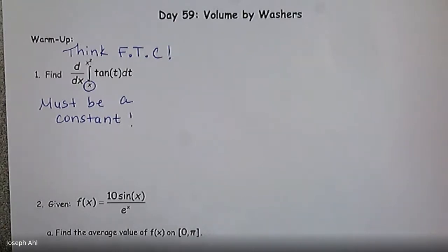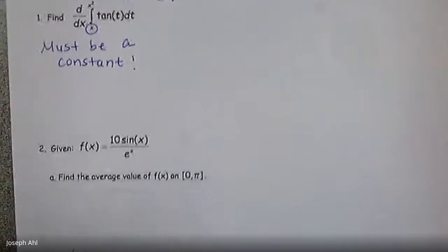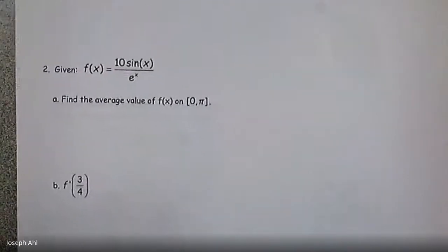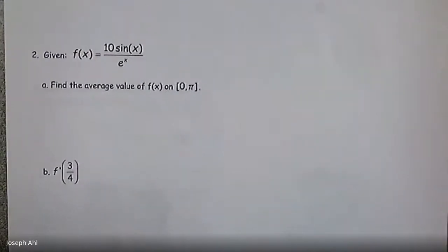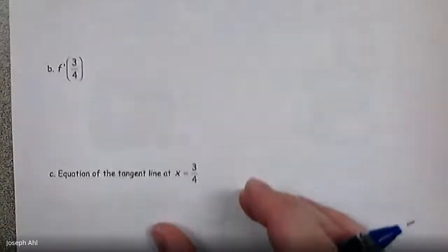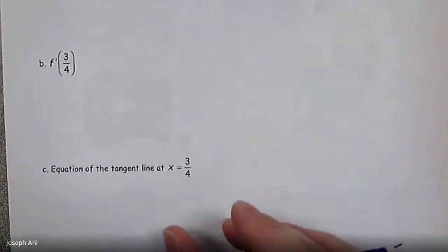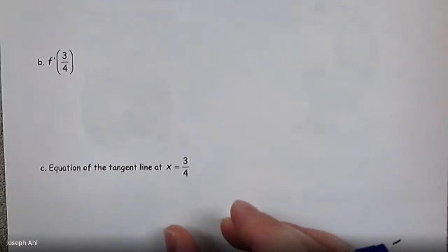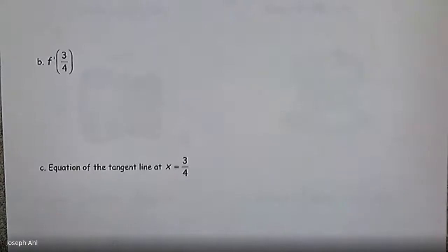Number two is given the function F of X, find the average value — that's on day 44 if you're not recalling what average value is — and then find F prime of three-fourths, which would lead you to the equation of the tangent line at X equals three-fourths. Give that one a shot as well.